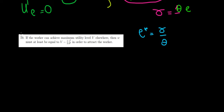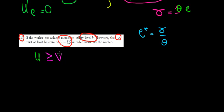Let's have a look at question 19. If the worker can achieve a maximum utility level V elsewhere, then the wage must be at least the following to attract the worker. The intuition here is: if the worker can work somewhere else and have a certain happiness from that, then for us to make him work at our company, we must make his utility from our company at least the same as the utility in the other company — greater than or equal to V.